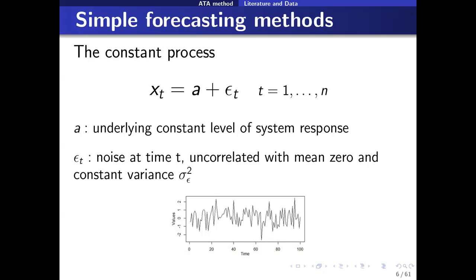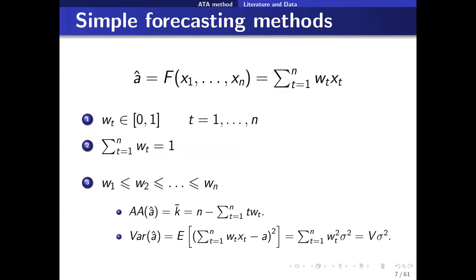Simple forecasting methods assume that the data follows a constant process. So Xt is assumed to oscillate around a constant level A with a random noise epsilon_t, which we assume has mean zero and constant variance sigma squared epsilon. The goal is to obtain an estimate for the level using a weighted function of observed data of the form: summation t equals 1 to n of Wt times Xt, where each observation at time t receives a weight Wt. These weights should be between 0 and 1, must sum to 1, and should be increasing in order.